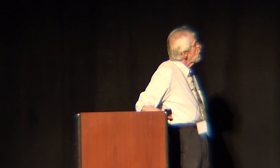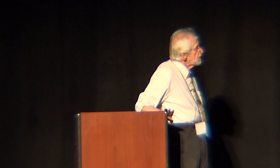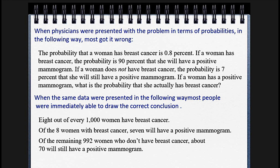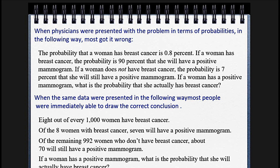Eight out of every thousand women have breast cancer. Of the eight women with breast cancer, seven will have a positive mammogram — that's exactly the same data explained in a different way. Of the 992 women who don't have breast cancer, about 70 will still have a positive mammogram. The right way to analyze this, as it's taught in many medical schools, is to make a two-by-two table. Across the horizontal you put the mammogram results, and in the vertical columns whether they actually have cancer or don't.